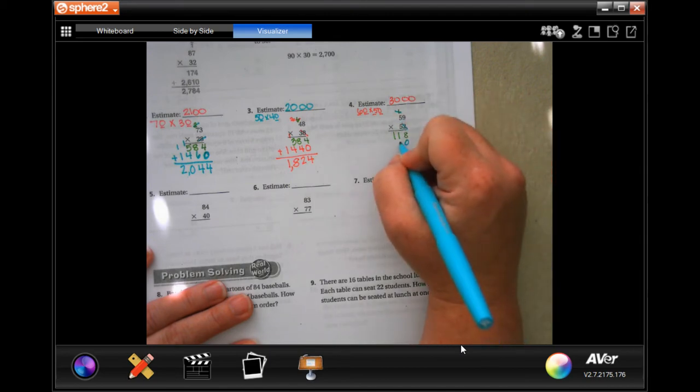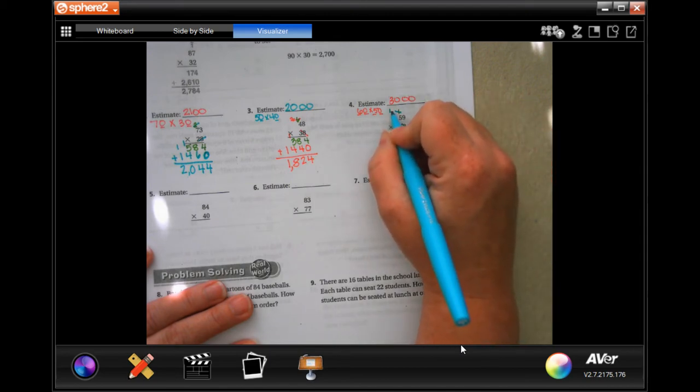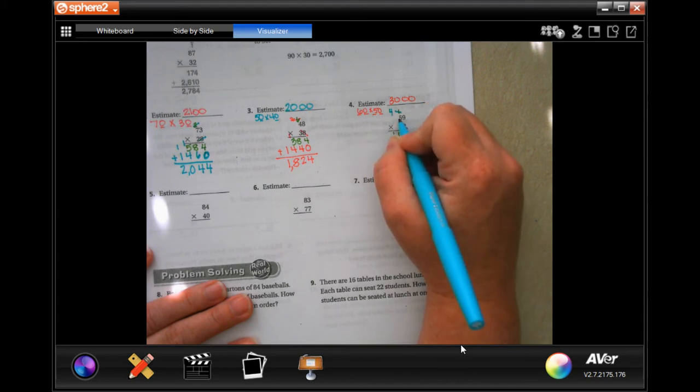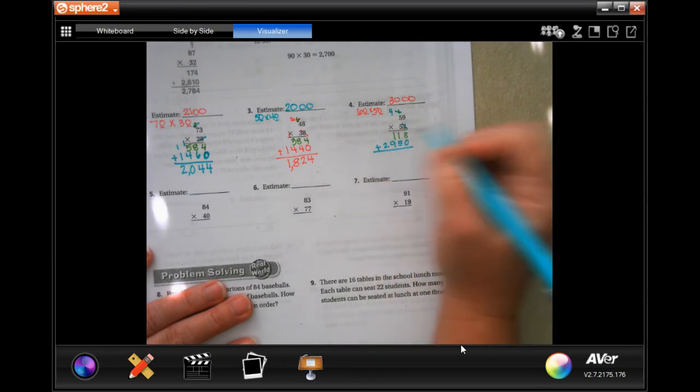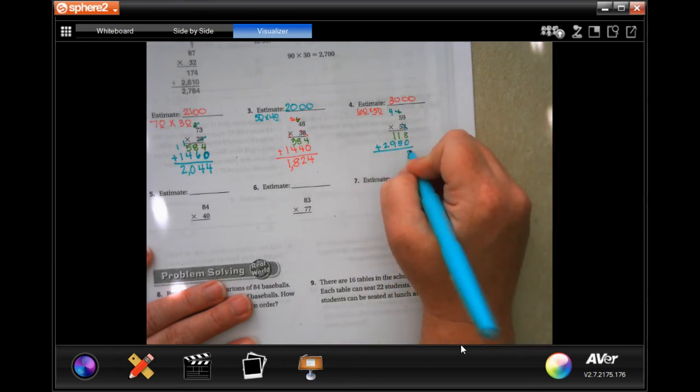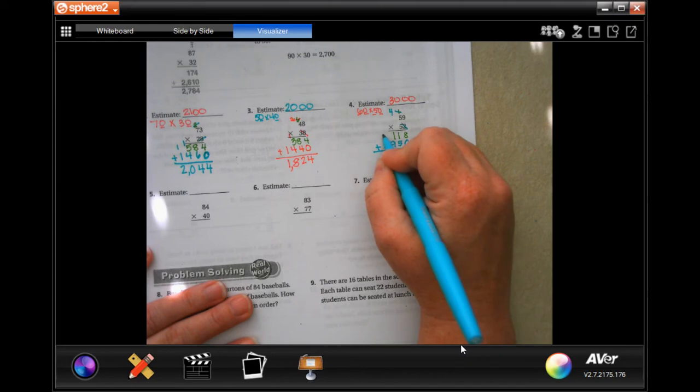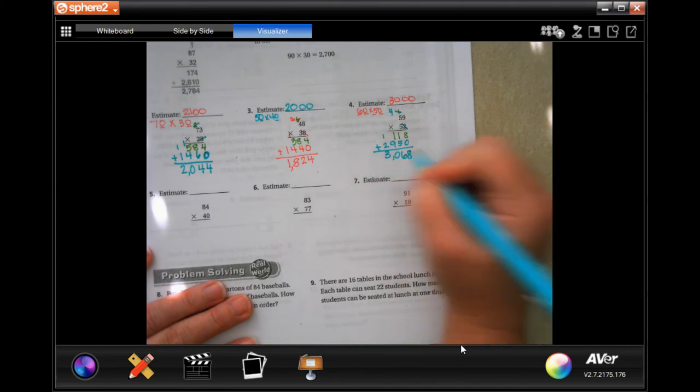5 times 9 is 45, we're going to carry our 4. 5 times 5 is 25, plus 4 more is 29. Add them up, 8, 6, 10 carry our 1, and 3. 3,068.